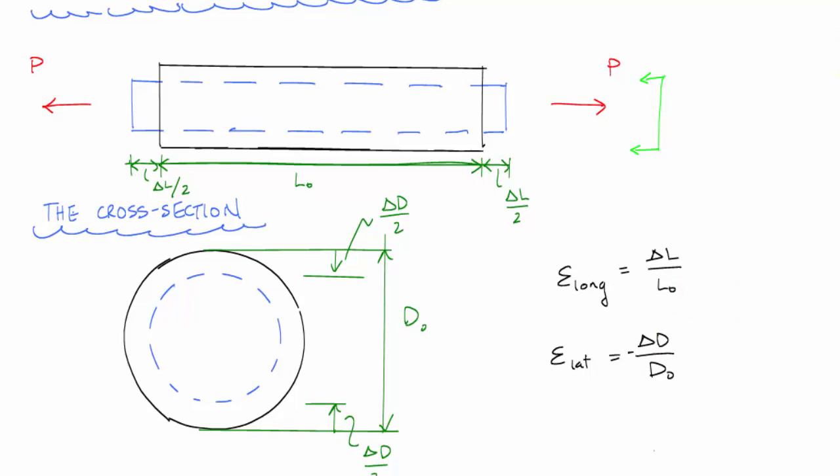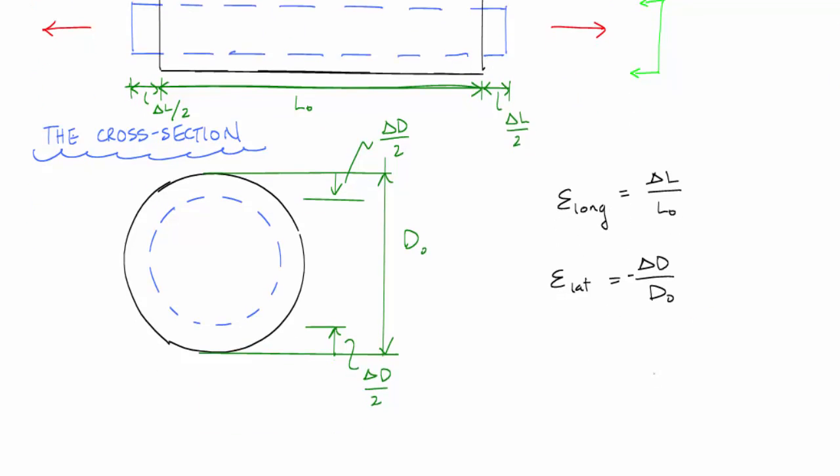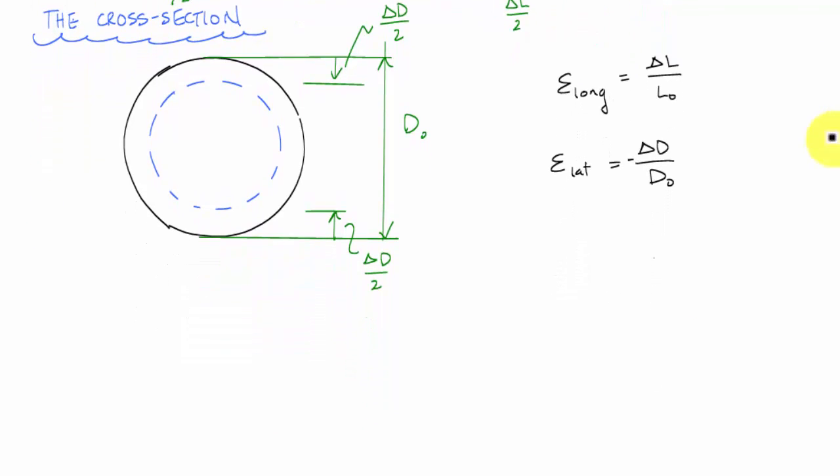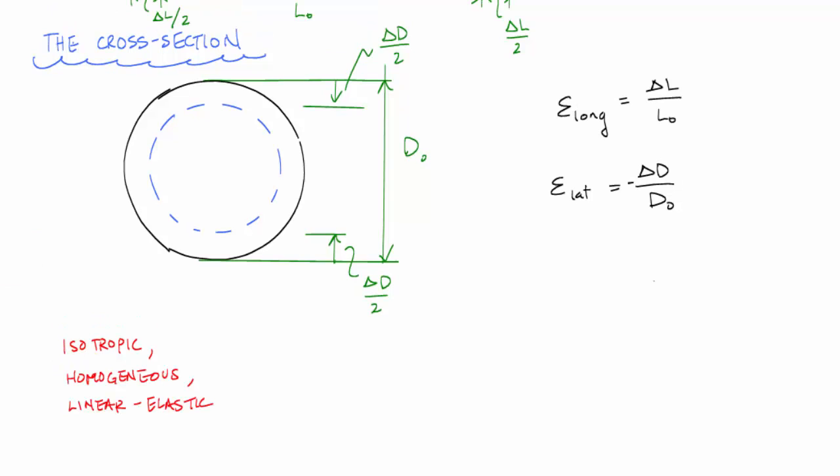What Poisson observed is that for different materials, and in fact if the materials were isotropic, homogeneous, and we were in the linear elastic region, he observed that the ratio between the lateral and the longitudinal strain was equal to some constant. And this is the Poisson's effect. And he noticed that if you had elongation in the axial direction, that there was contraction in the lateral dimensions.